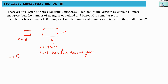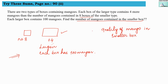From this information we have to frame an equation. What do we have to find out? We need to find the number of mangoes contained in one smaller box. So let us guess this number as x, because that is what we have to find out. Now with this x and the given information, let us frame an equation.